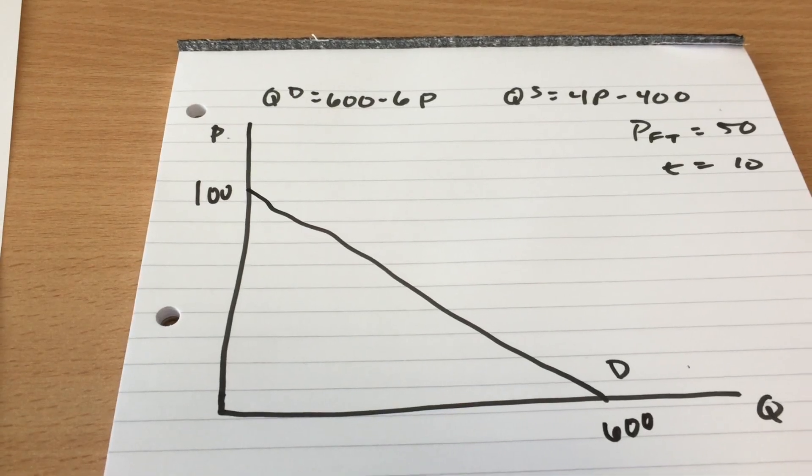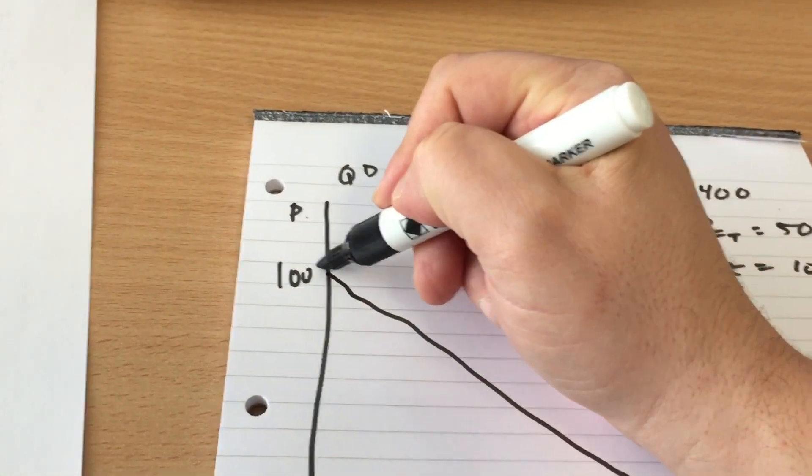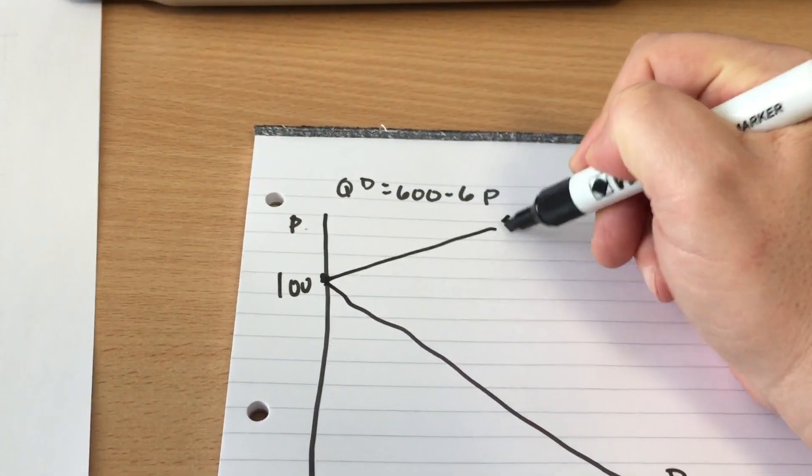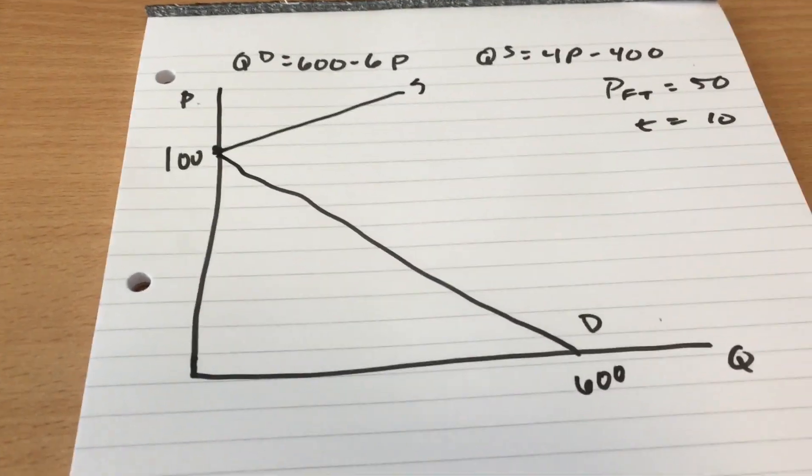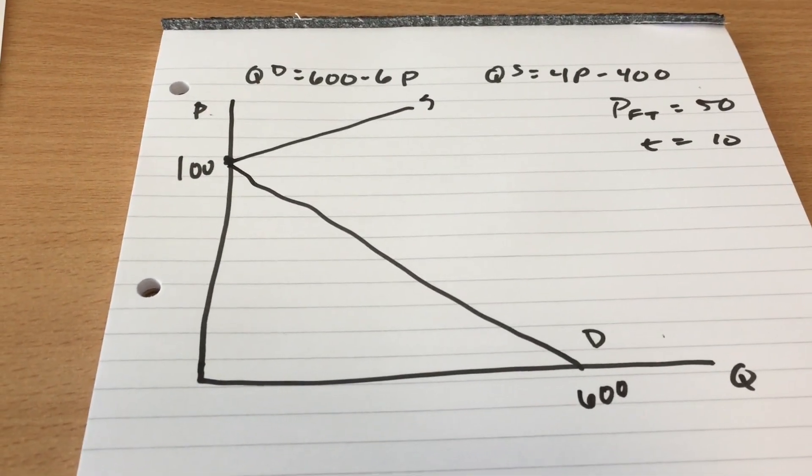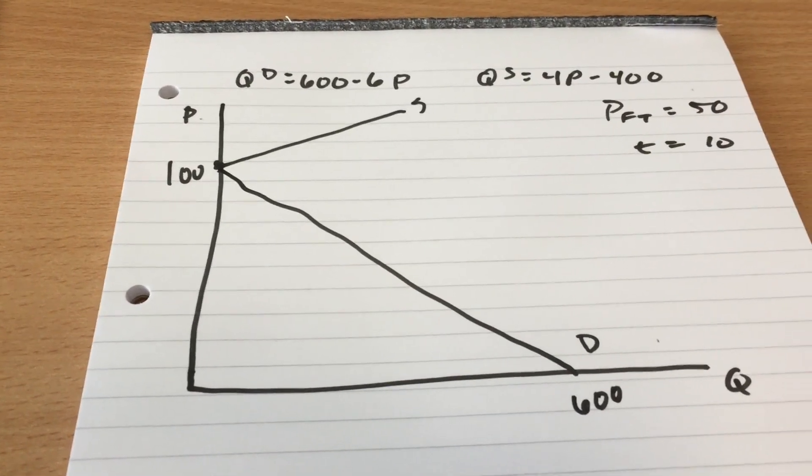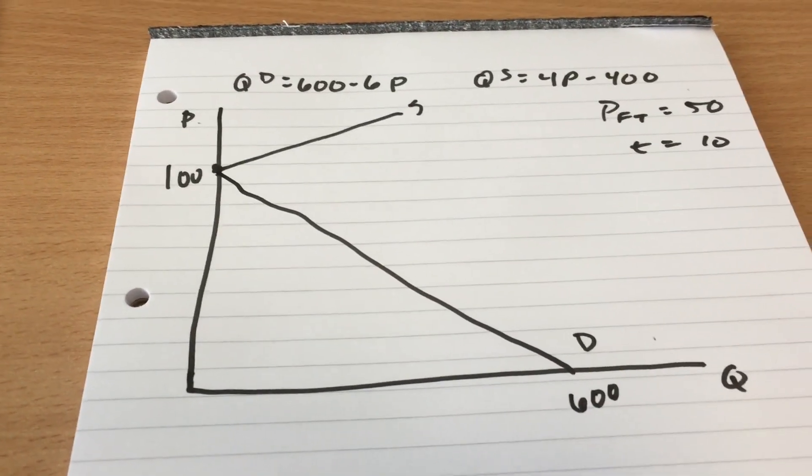So supply curve when the price is 100, quantity supplied is 0. So that's actually where the supply curve starts and it looks like that. So this is a country that's actually not going to produce any of the imported good at all. Think about this is like Ireland in cars. We import cars but we don't make any cars ourselves.